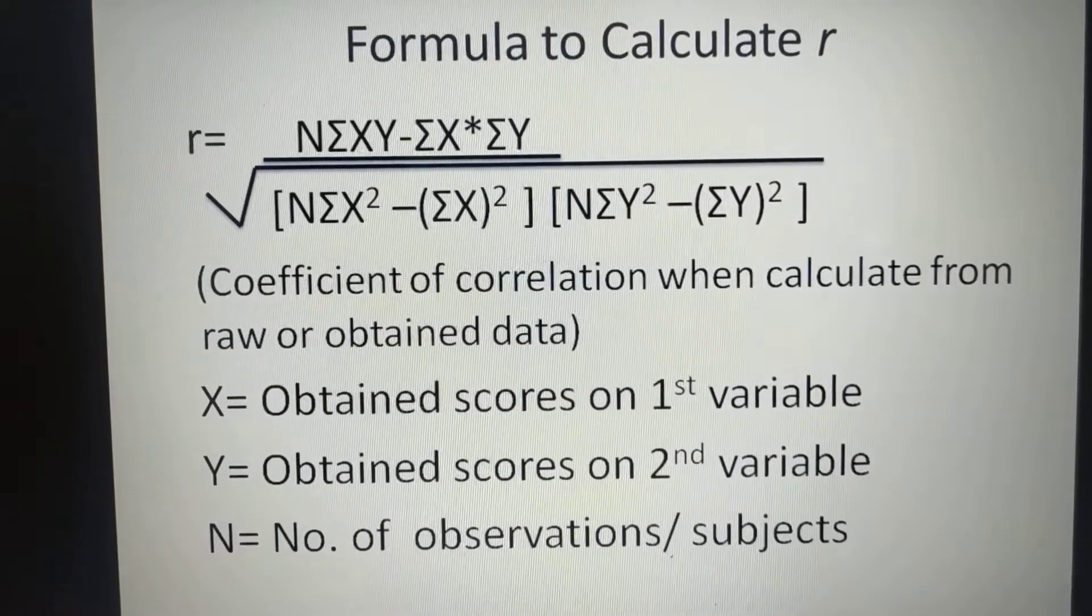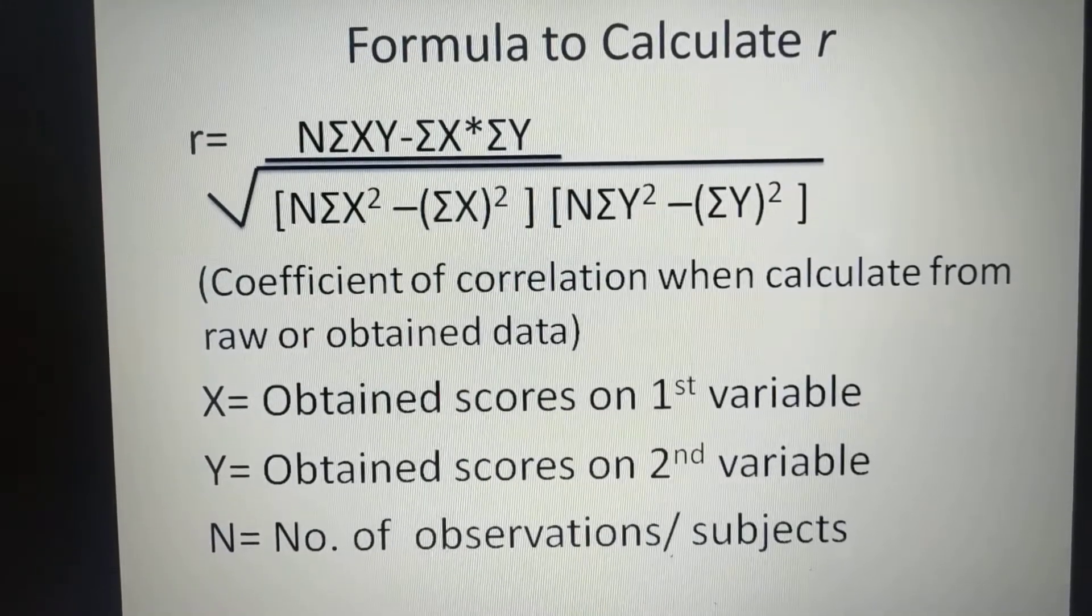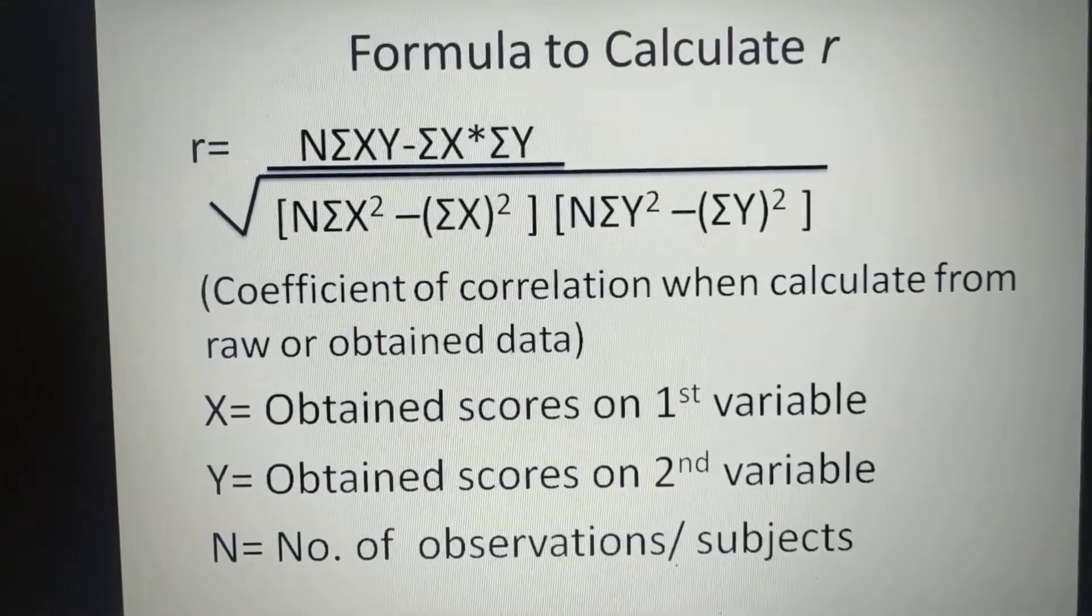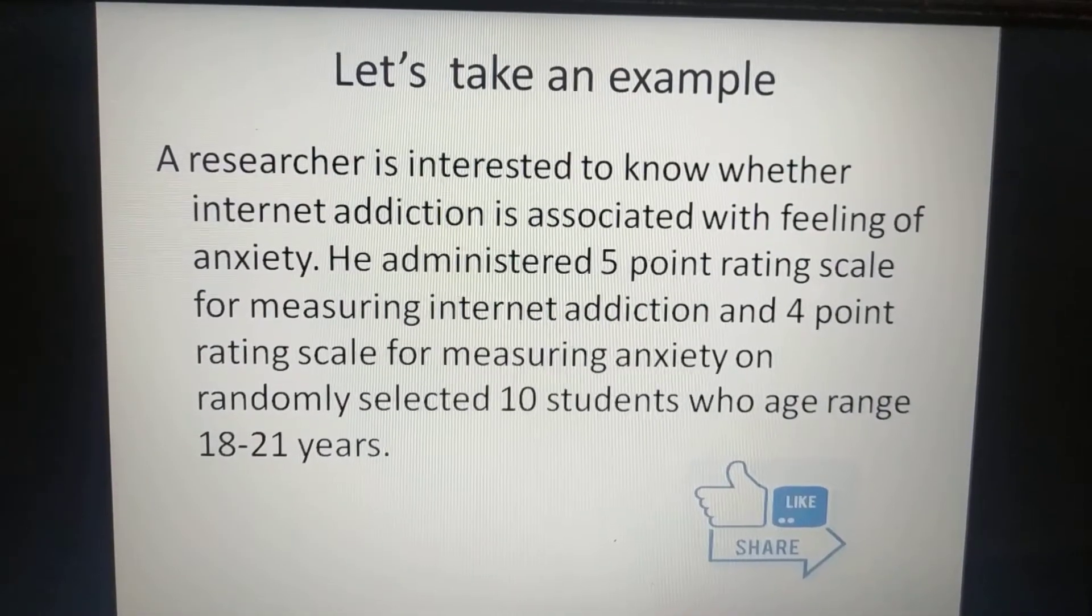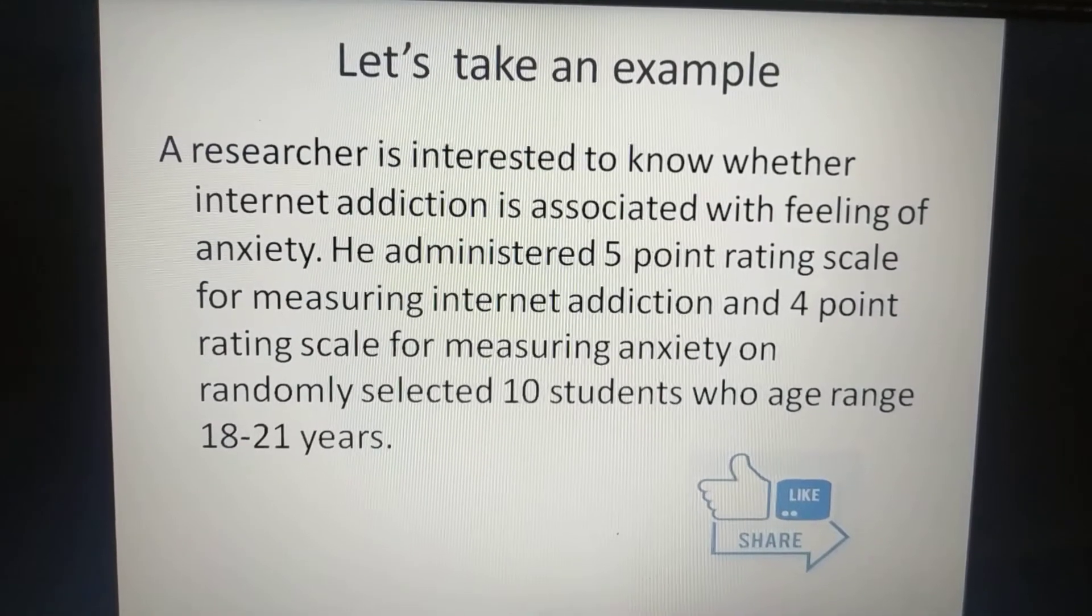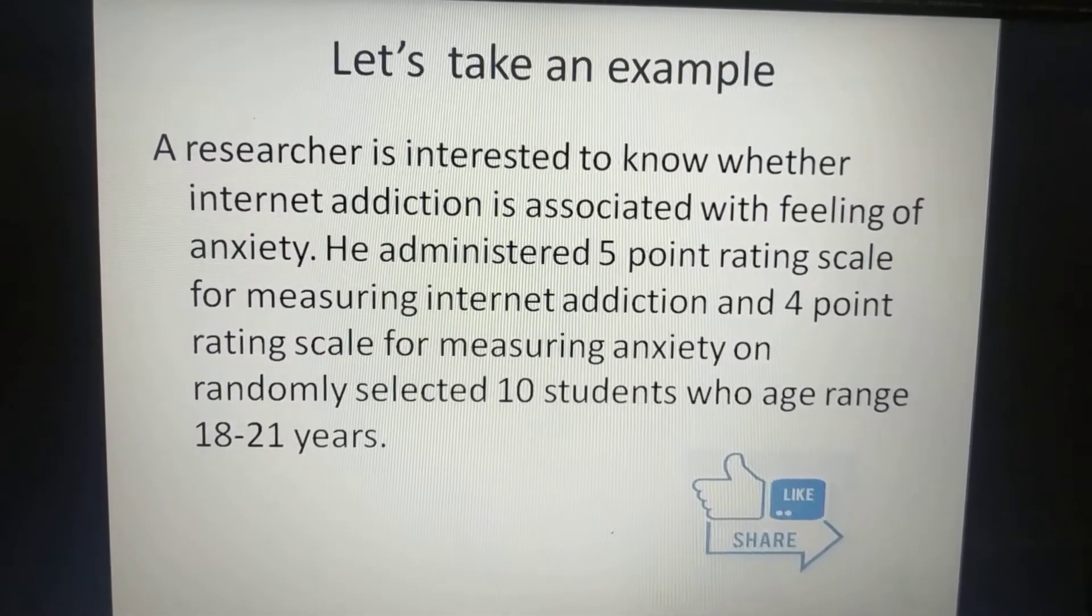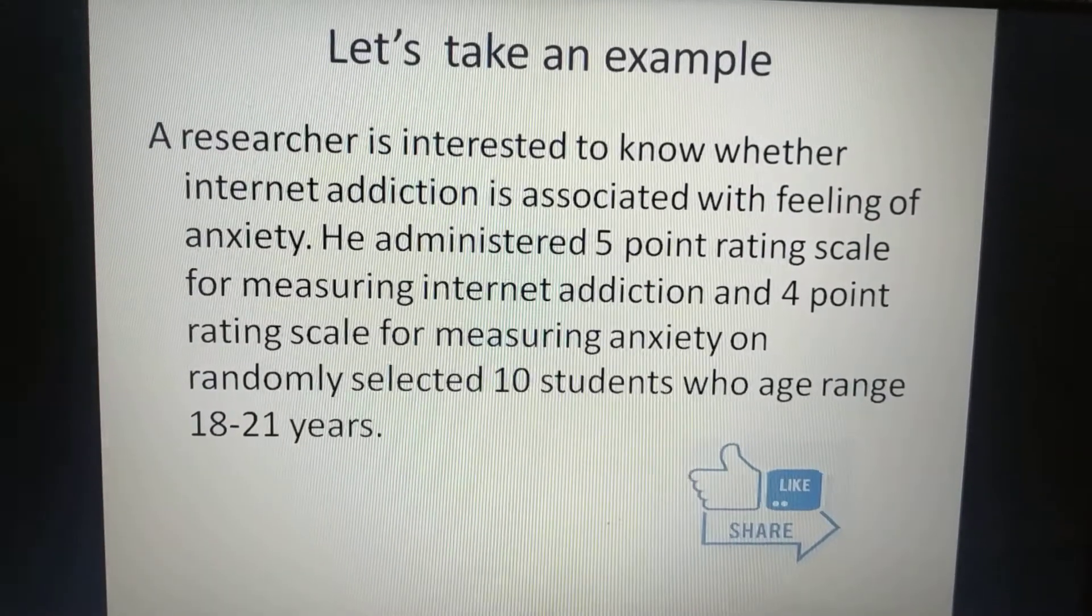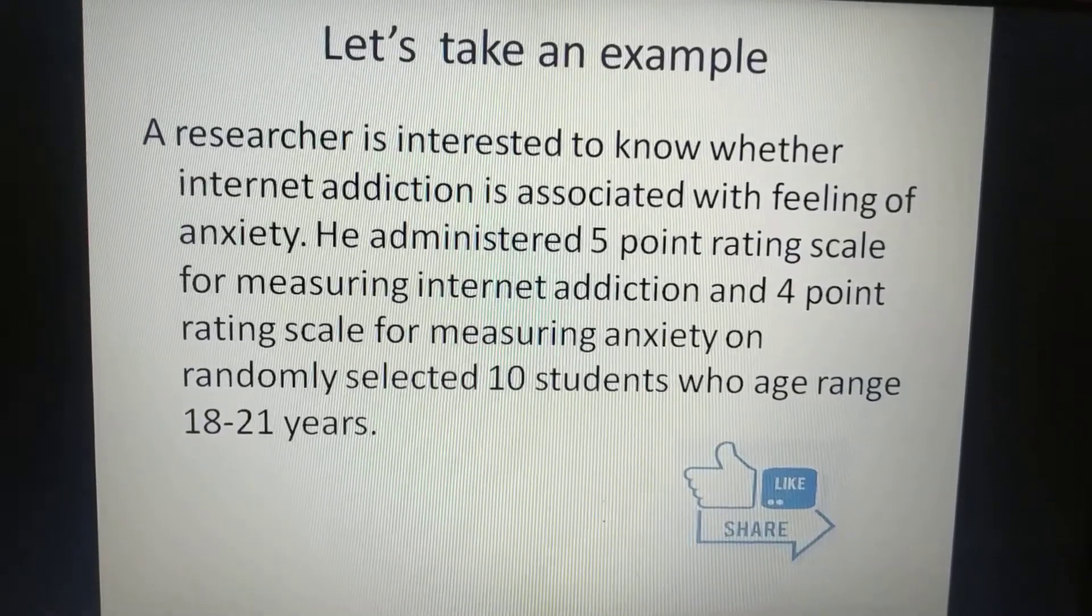X stands for obtained scores on first variable, Y stands for obtained scores on second variable, N is number of observation or subjects. Let's take an example. A researcher is interested to know whether internet addiction is associated with feeling of anxiety.